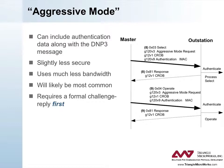The outstation authenticates this MAC and sends a normal select response. The operate sequence is similar, except that the DNP3 sequence number is incremented and an operate function code is used, as usual.